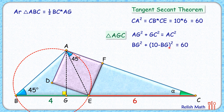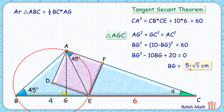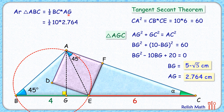Opening the bracket and simplifying gives a quadratic in terms of BG. Solving this quadratic, we get two values; ignoring the negative value, BG equals 5 minus √5 centimeters. Since in triangle ABG, BG and AG are equal, AG is also 5 minus √5, which simplifies to approximately 2.764 centimeters.